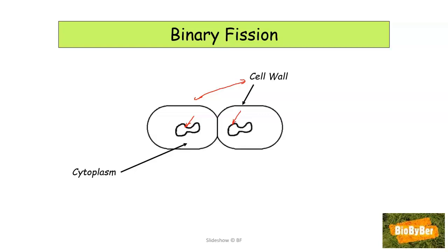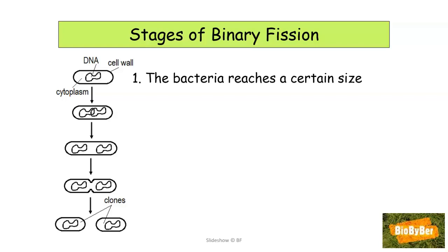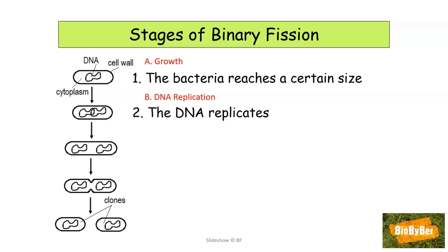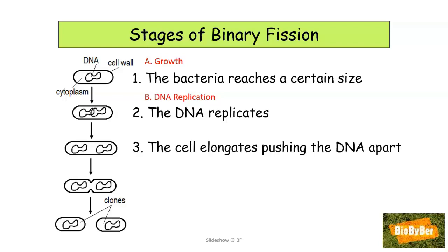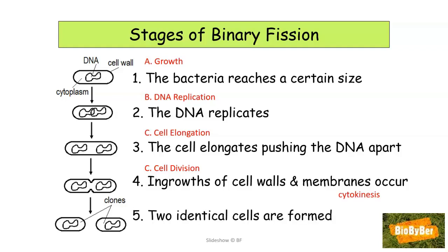Looking at this in a stepwise process: in the first step, the bacterial cell grows to a certain size, corresponding to the phase of growth. Then DNA replication takes place — the chromosomal DNA makes an exact copy of itself. This is followed by cell elongation, pushing the replicated DNA strands apart. Ingrowths of the cell membranes and cell walls then occur — this is referred to as the cell division phase — and ultimately two new identical daughter cells are formed.